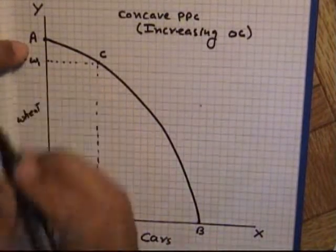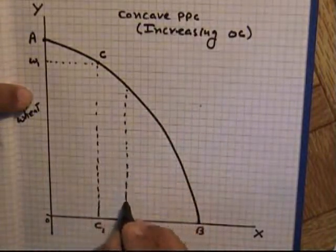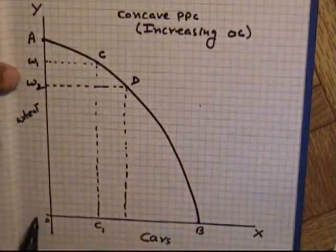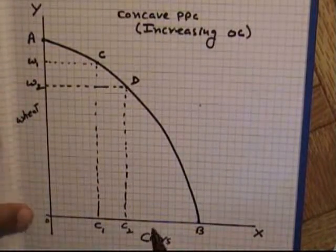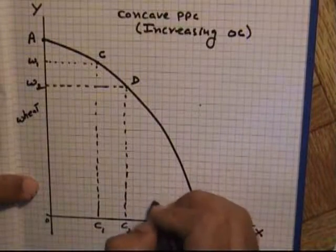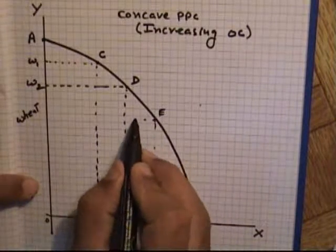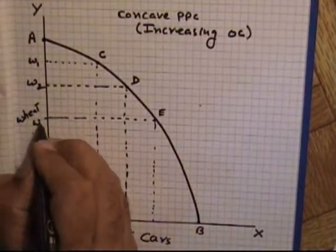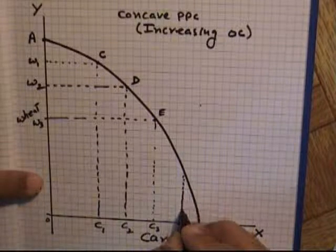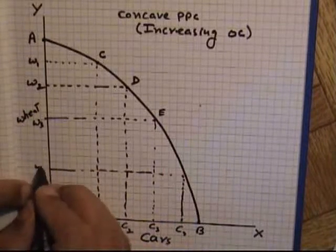Point D shows production of wheat at OW2 and cars at C2. At point E, production of wheat is W3 and cars is C3. If production is further increased to C4 of cars, then wheat will be W4. These points illustrate how the production mix changes along the concave curve.